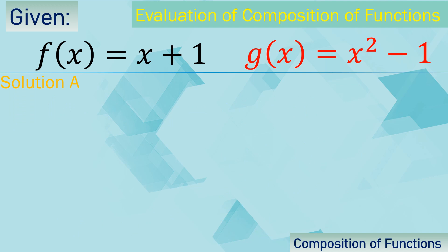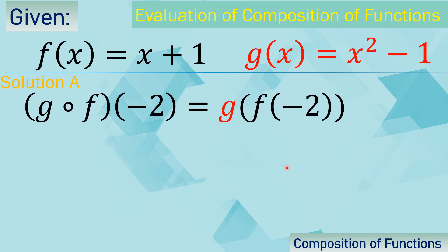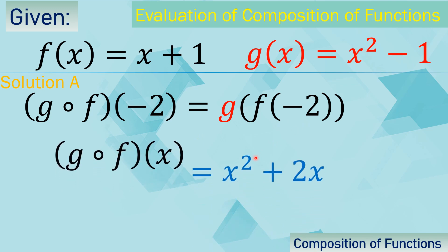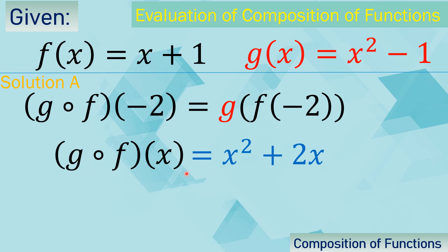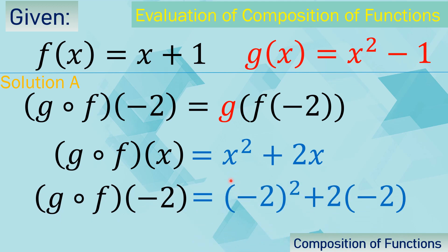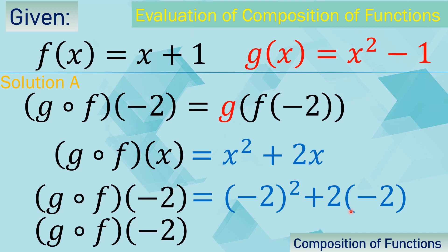So what if we are now looking for g of f of negative 2? We can now use the new function that we just solved, which is g of f of x is equal to x squared plus 2x. We will just substitute negative 2 to x. So we have the square of negative 2 and 2 times negative 2. G of f of negative 2 is 0, because this is 4 and 4 minus 4 is 0.